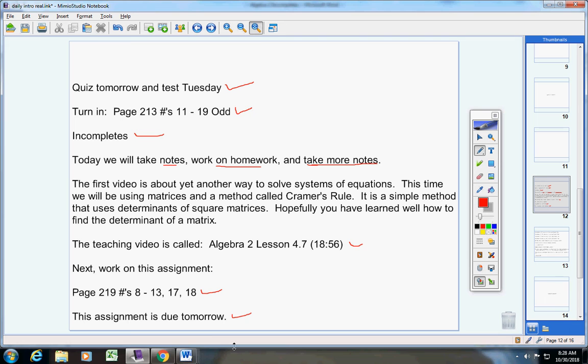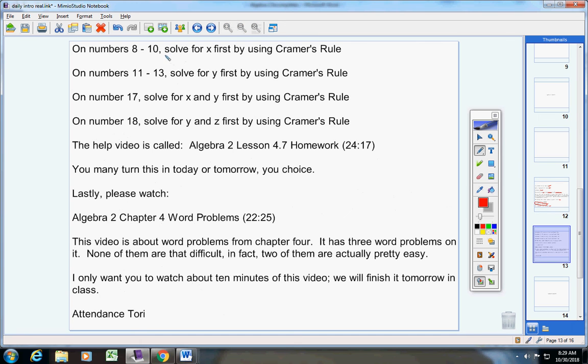Now listen, listen carefully. Please copy this down and listen to these instructions. Cramer's rule is not that long but it can take a little bit of time. So because of that for numbers eight through ten there are two. Listen carefully guys. I'm going to explain this a lot but you got to listen for eight through ten.